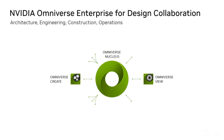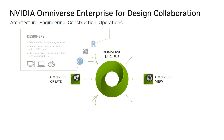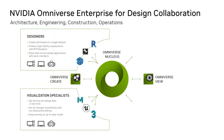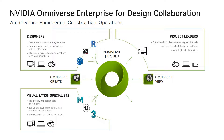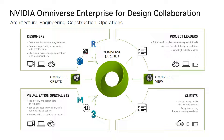In this design collaboration example, we have four groups of stakeholders: designers, visualization specialists, project leaders, and clients. It starts with the Omniverse Nucleus server — the database and collaboration engine. With Omniverse Nucleus, teams can have multiple users connected live with multiple applications all at once, enabling people to use the application they're most comfortable with and opening doors for rapid iteration.